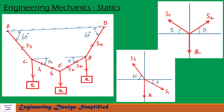Now let us see the free body diagram at E. At E, we have weight Q acting downwards, S2 is acting towards this direction with the angle between horizontal and S2 being beta. Again, S1 is acting towards this direction, with the angle between S1 and the horizontal also being beta.